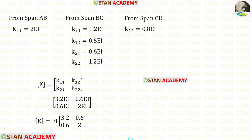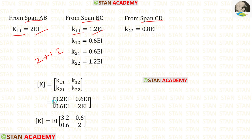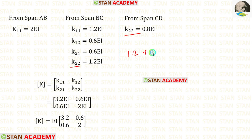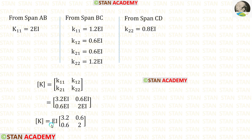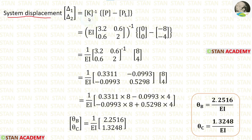We have found the stiffness matrix elements from all three spans AB, BC, and CD. For K11, we add the two values: 2 plus 1.2 gives 3.2. For K22, we add 1.2 plus 0.8 to get 2. Then we apply K12 and K21 values. Keeping EI outside as a constant, we now apply all values in the system displacement formula.